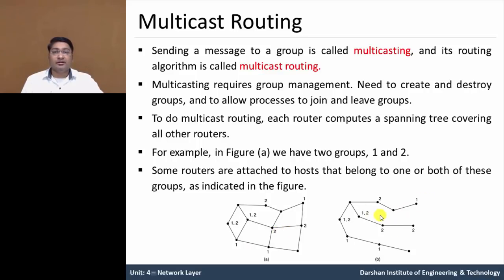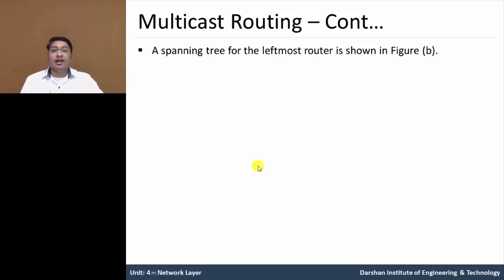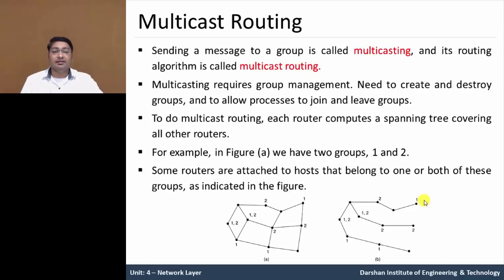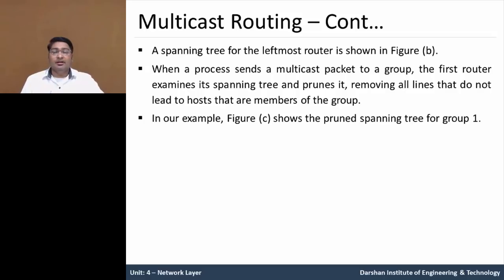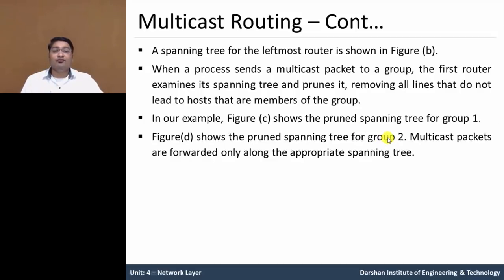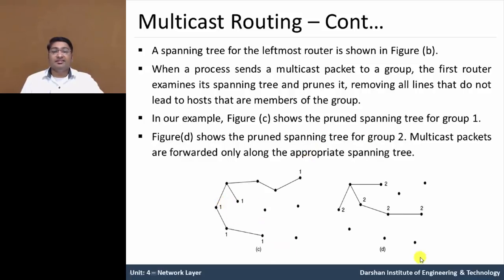In multicast routing, a spanning tree for the leftmost router is shown in figure B and C. When a process sends a multicast packet to a group, the first router examines its spanning tree and prunes it — removing all lines that do not lead to hosts that are members of the group. In this example, figure C shows the pruned spanning tree for group 1, removing all other groups. Figure D shows the pruned spanning tree for group 2. Multicast packets are forwarded only along the appropriate spanning tree.